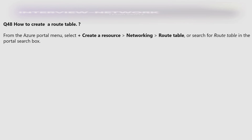How to create a route table? From the Azure portal menu, select 'Create a resource,' then select 'Networking,' and from there select 'Route Table.' Or search for 'Route Table' in the portal search box.